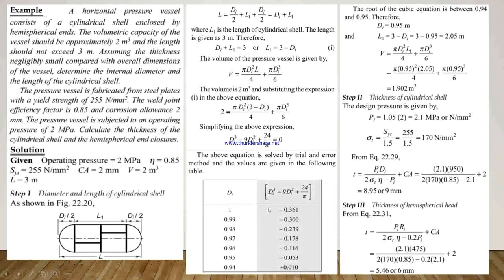The values from the trial and error method are given in the following table. For Di = 1 and subsequent values, substituting into the equation Di³ − 9·Di² + 24/5, the first values yield negative results. For Di = 0.94 we get a positive value. So for the root of the cubic equation, between 0.94 and 0.95 there is a sign change. Therefore we take Di = 0.95 m.